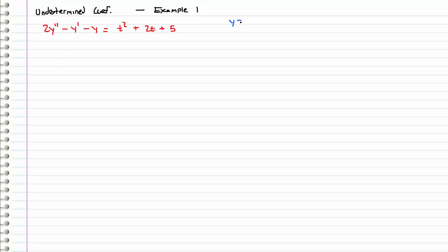Recall from the previous video that the way we solve non-homogeneous problems is first we find the homogeneous solution, then we find a particular solution, add them together, and take that as our general solution. So the very first step is always to find the homogeneous solution. To do that — this is pretty much exactly what we have been doing for the past several videos — instead of having t squared plus 2t plus 5, I'm just going to put zero.